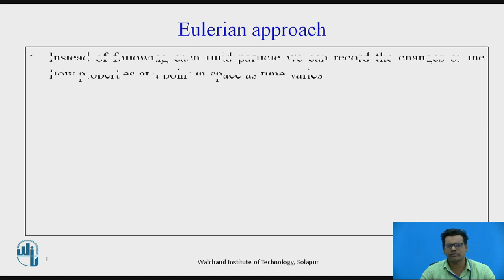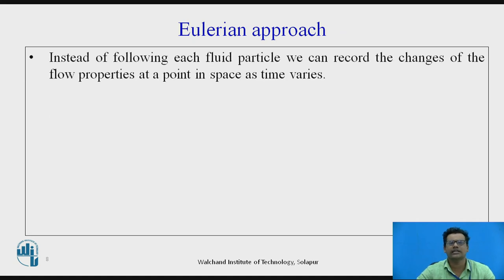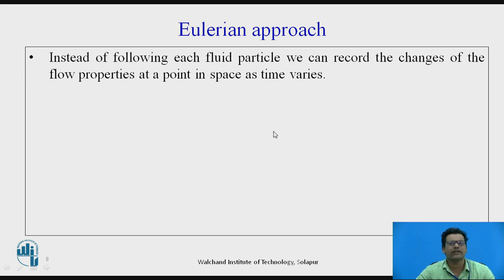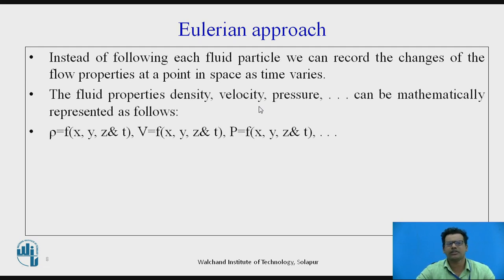In the Eulerian approach, instead of following each fluid particle, we record the changes of the flow properties at a fixed point in space as time varies. We fix one location and note down the properties as different particles move through that point. Mathematically, the fluid properties like density, velocity, and pressure can be expressed as functions of x, y, z, and time — so rho is a function of x, y, z, and t.